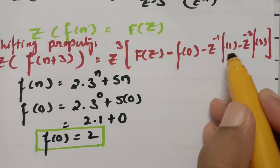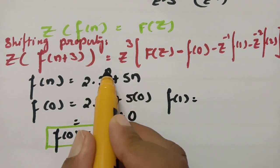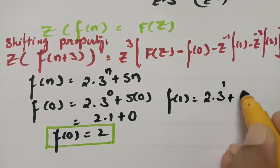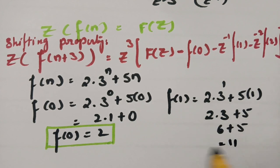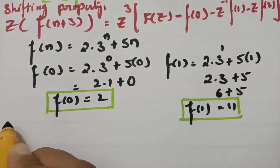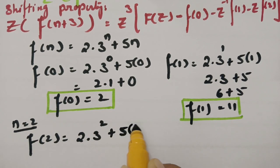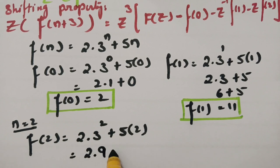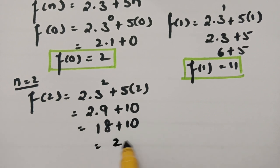Next, f(1): substituting n=1 gives 2·3^1 + 5·1 = 6 + 5 = 11. So f(1) = 11. And f(2): substituting n=2 gives 2·3^2 + 5·2 = 2·9 + 10 = 18 + 10 = 28. So f(2) = 28.